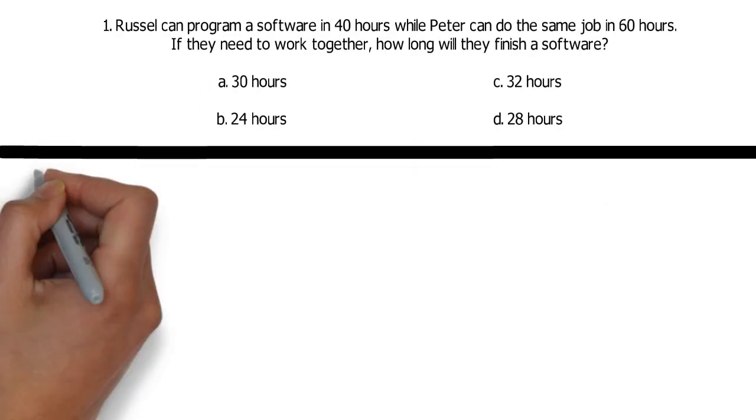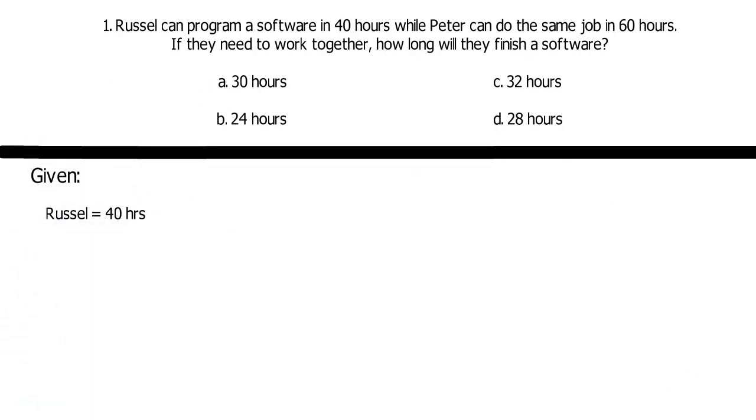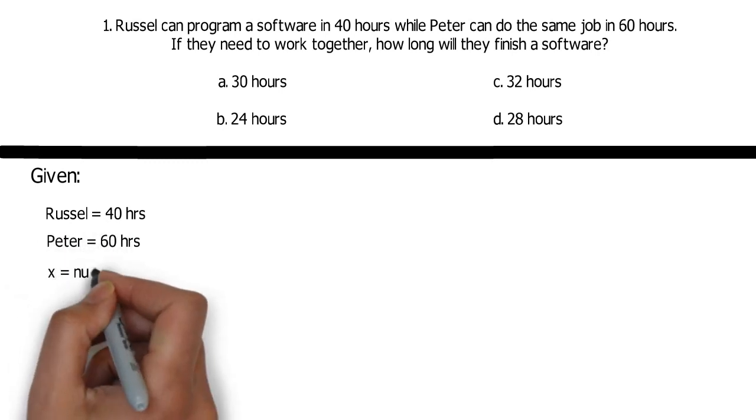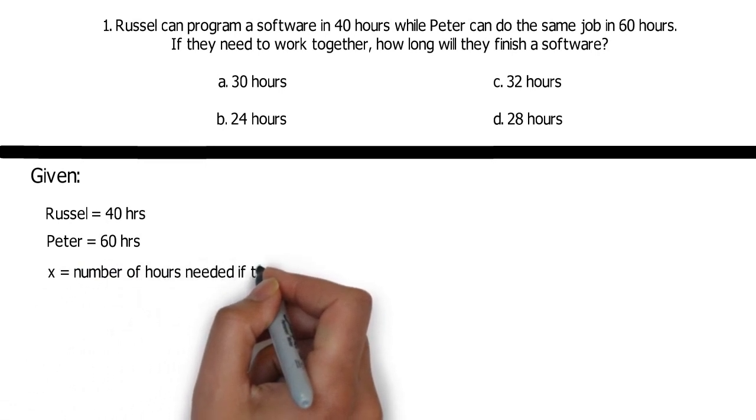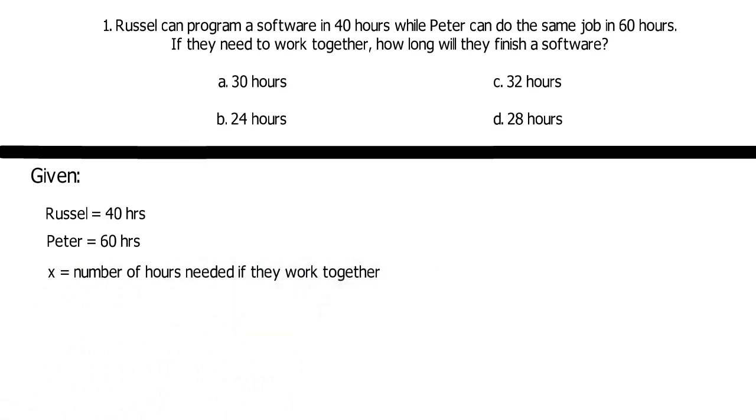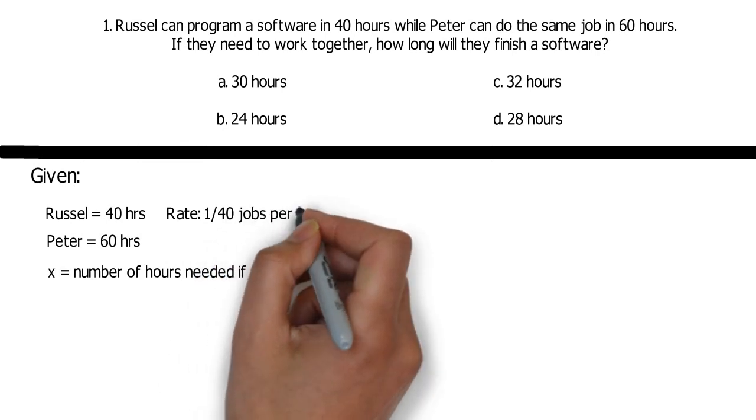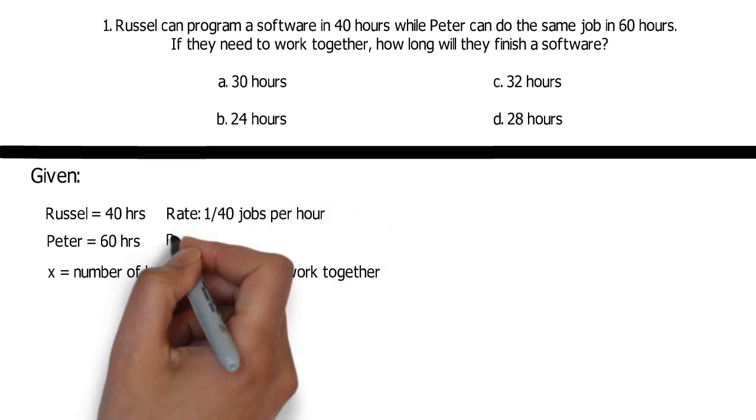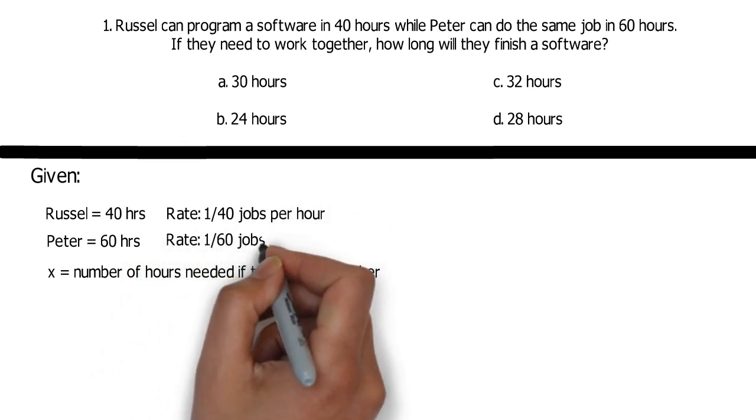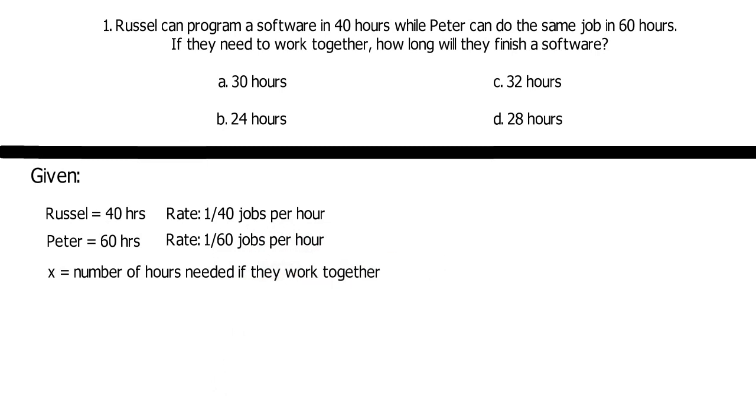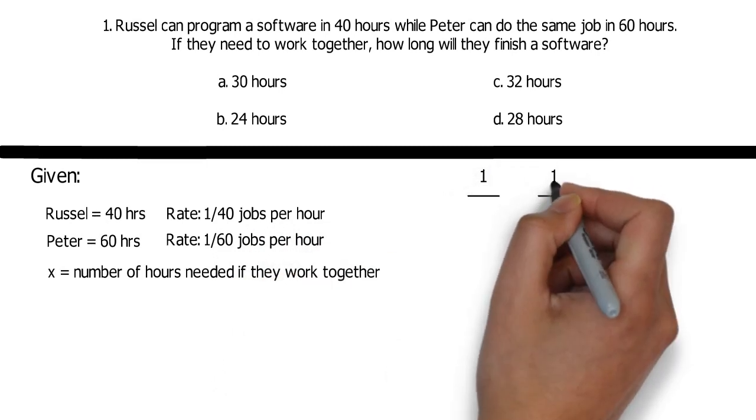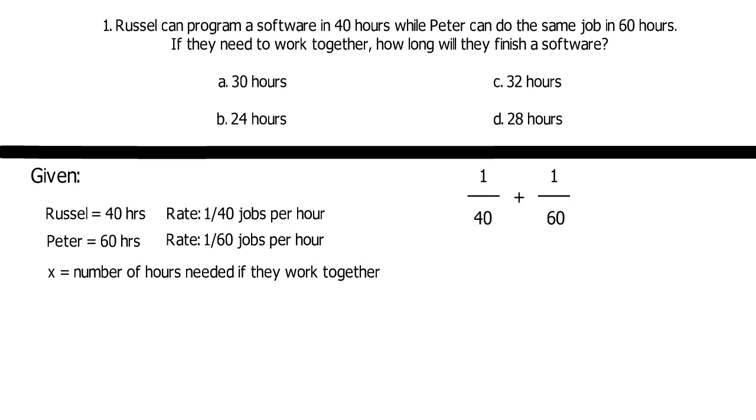In time problem number 1, Russell can do a software in 40 hours while Peter in 60 hours. So first, let x be the number of hours needed if they work together. We know that Russell can do one job in 40 hours, meaning he has the rate of 1 over 40 jobs per hour. The same goes with Peter, with a rate of 1 over 60 jobs per hour. The question asks, what if they work together? So let's add the rate.